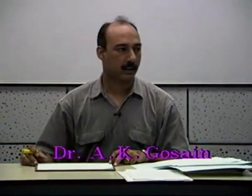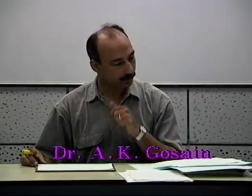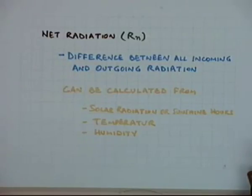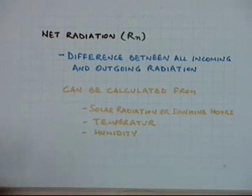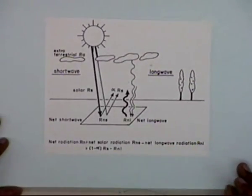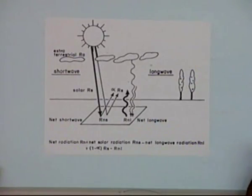To start with, let us see what do we mean by the net radiation. Net radiation is the difference between all the incoming and outgoing radiation with respect to the earth, because this is the source of the energy which is responsible for the evapotranspiration activity.